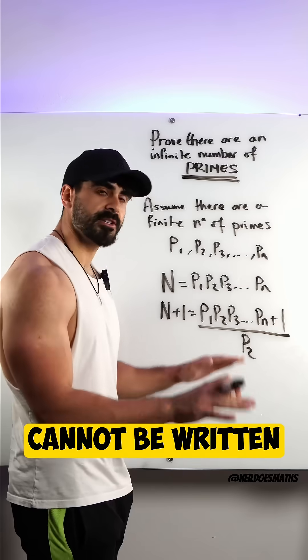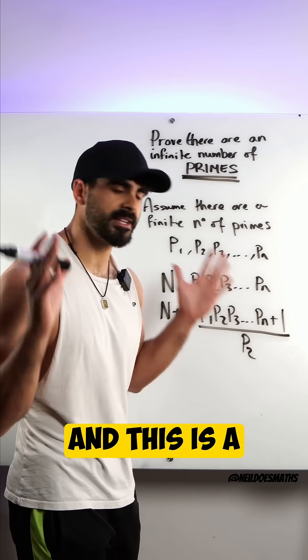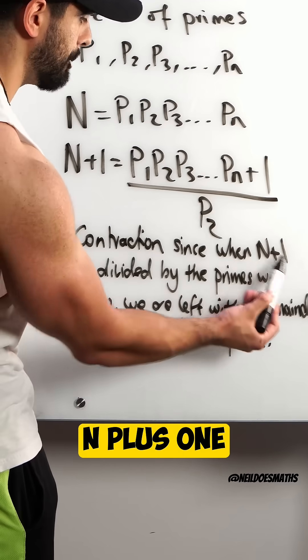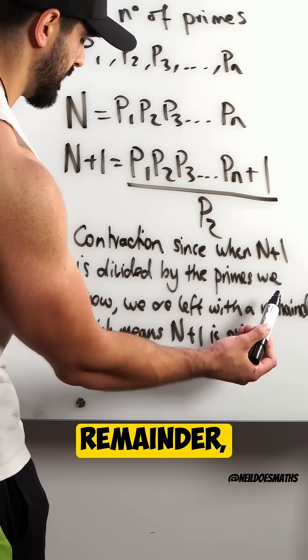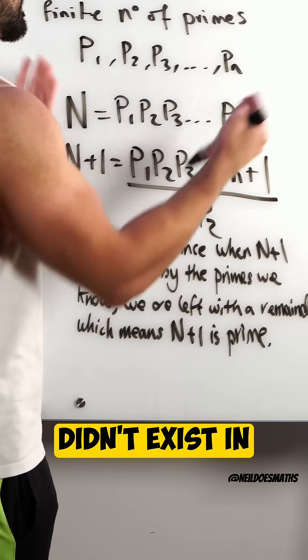So we state this is a contradiction: since when N+1 is divided by any of the primes we know, we are left with a remainder, which means N+1 is a prime number which didn't exist in our original list.